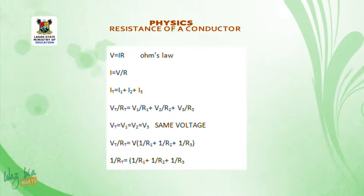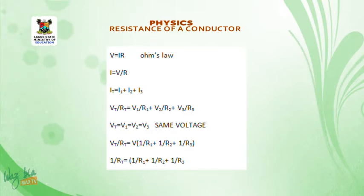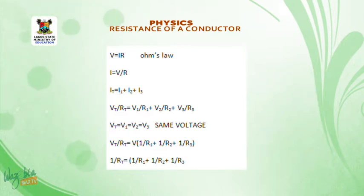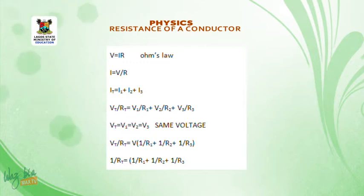Since the voltage across them is the same, we have a common voltage. At the end of the day: 1/RT equals 1/R1 plus 1/R2 plus 1/R3 — and continue if you have more than three resistors. That is why we have the dotted line.